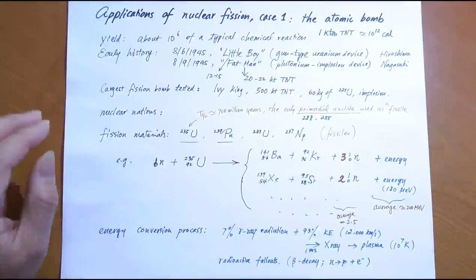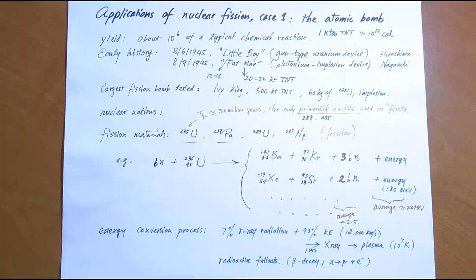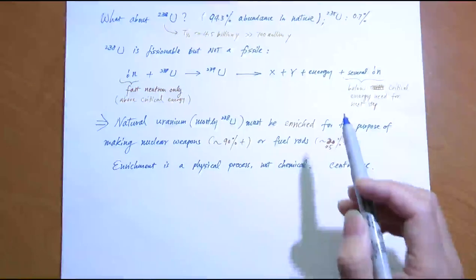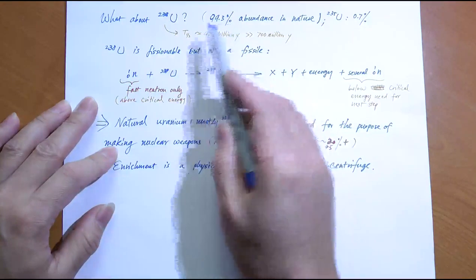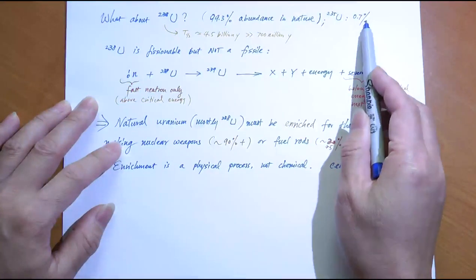Uranium-235 is the primary fissile material for atomic bombs and nuclear power plants. However, U-235 is not the abundant form of uranium. There are several isotopes — U-235, U-238, U-233, and others — but U-238 is the predominant isotope, making up 99.3% of natural uranium found on Earth. U-235 is only about 0.7% in abundance.